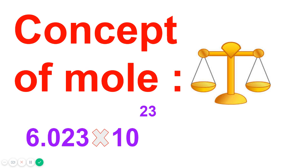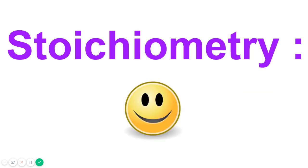Hello students, this video deals with a very important topic of chemistry known as mole. Mole is an SI unit for measuring the amount of a substance. Before discussing it, you should know what stoichiometry is — it's a branch of chemistry which deals with the study of quantitative relationships between reactants and products in a balanced chemical equation.